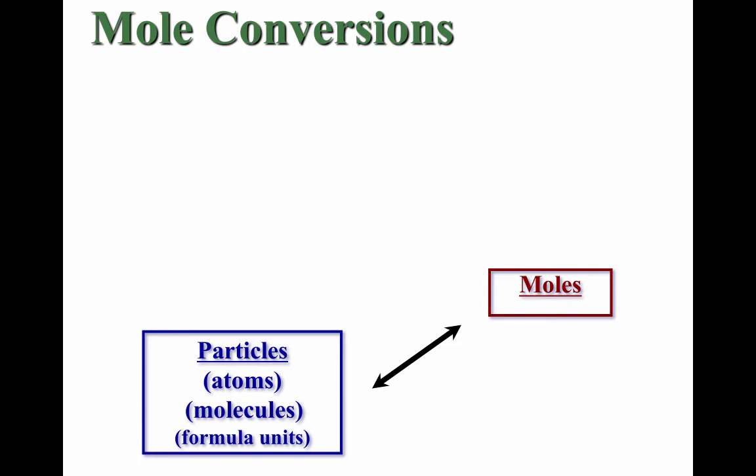The first of those calculations we'll look at is converting from particles to moles. This term particles can mean several different things. Sometimes in chemistry, we use a single element for a particle, an atom. So if we were measuring carbon, those particles are called atoms. In other cases, we may be talking about combinations of atoms, such as carbon dioxide. These particles are known as molecules.